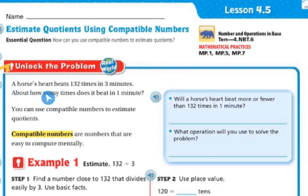Let's unlock the problem. A horse's heart beats 132 times in three minutes. About how many times does it beat in one minute? You can use compatible numbers to estimate the quotients. Compatible numbers are numbers that are easy to compute mentally.